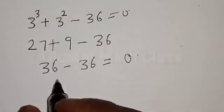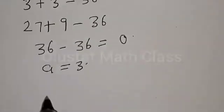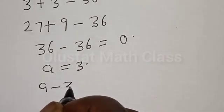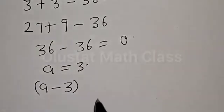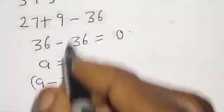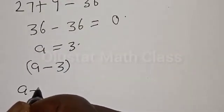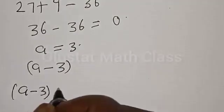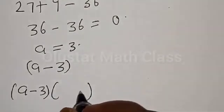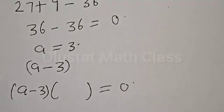This is equal to 0. Therefore, one of the roots is a equal to 3. Therefore, we have a minus 3 as one of the factors. Then let's look for other factors. From this, we have a minus 3 times something equal to 0. We need to know what we multiply a minus 3 with.